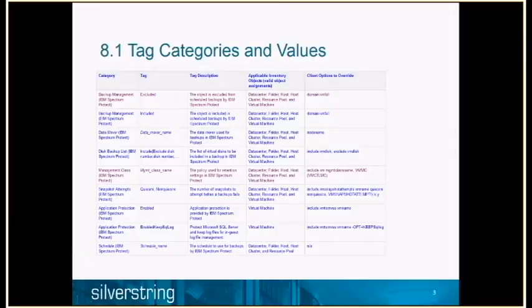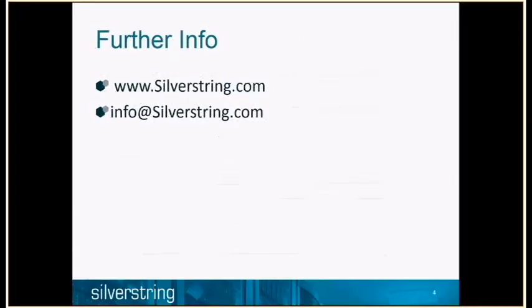This chart shows you the tags that were there before — the two in purple: backup management excluded, and management class name. Those were the only two tags you could use previously in 7.1.6. Now you've got an awful lot more tags: included, you can specify a particular data mover name, exclude or include disks rather than just excluding a VM, which means you can exclude disks used for device mapping. You've got application protection for SQL and Exchange, and you can also specify a Spectrum Protect schedule to back up the VM under. I'll let Dave explain why we think that's pretty useful.